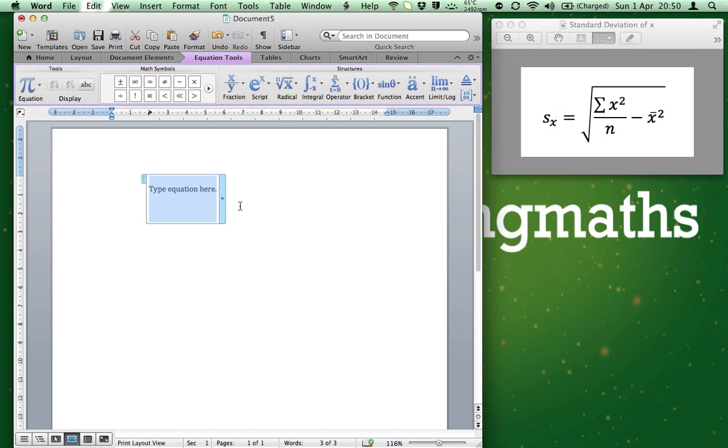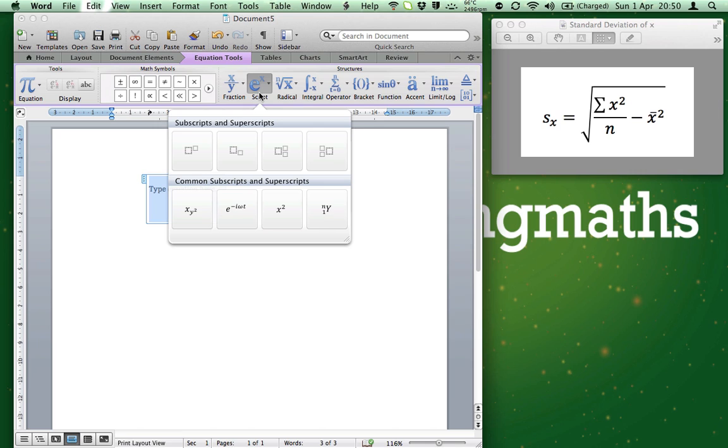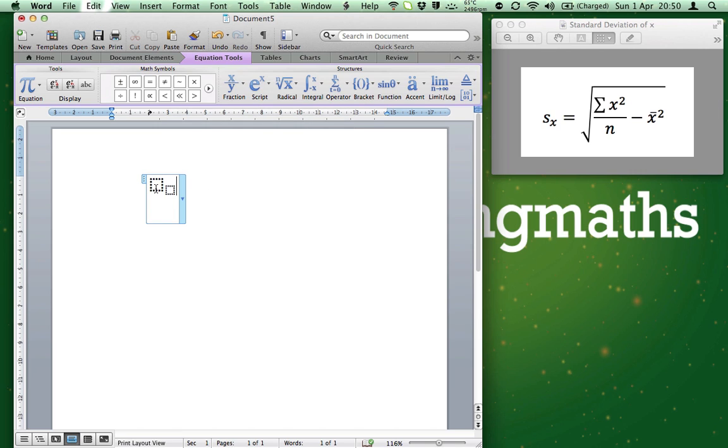Now, I want to type the S with the X as Subscript. I need to find the icon that says Script and click it. And it gives me different choices. I need to choose the second one. This gives me a box and a lower box. In the first box, if I click it, I then type S. And in the lower box, I type X.